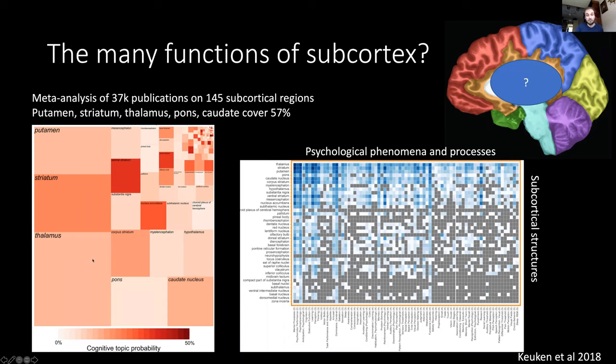The graph on the left is an illustration of this entire body of literature, and the relative size of these areas corresponds to the relative size of the publications. You can appreciate that the majority of these studies are focused on a minority of subcortical structures. The putamen, striatum, thalamus, pons, and caudate together cover 57% of all these publications.